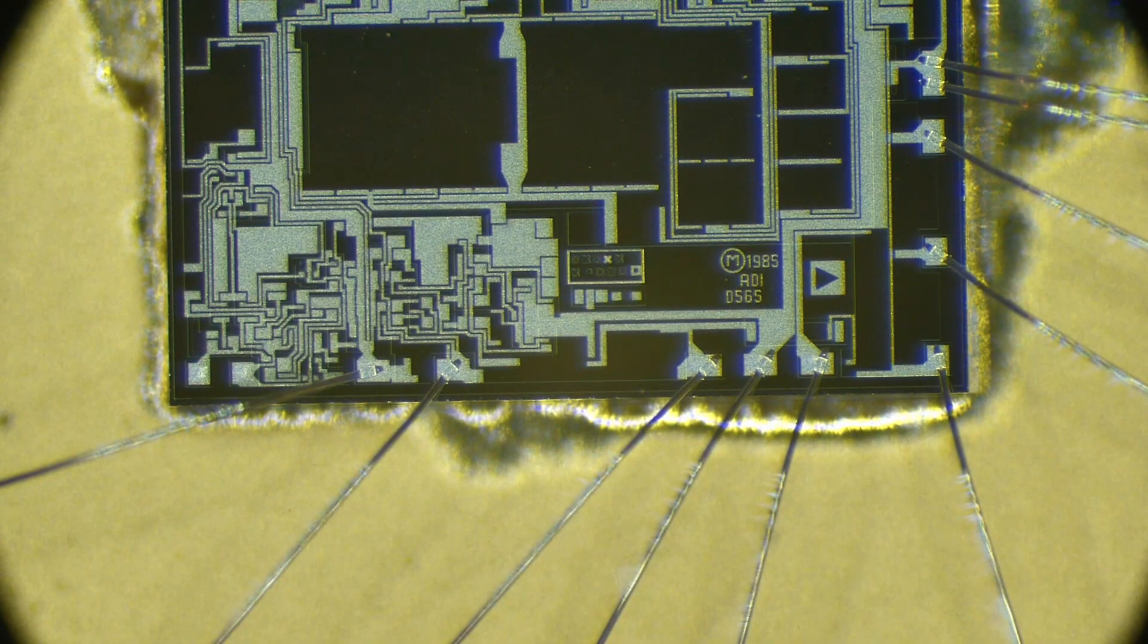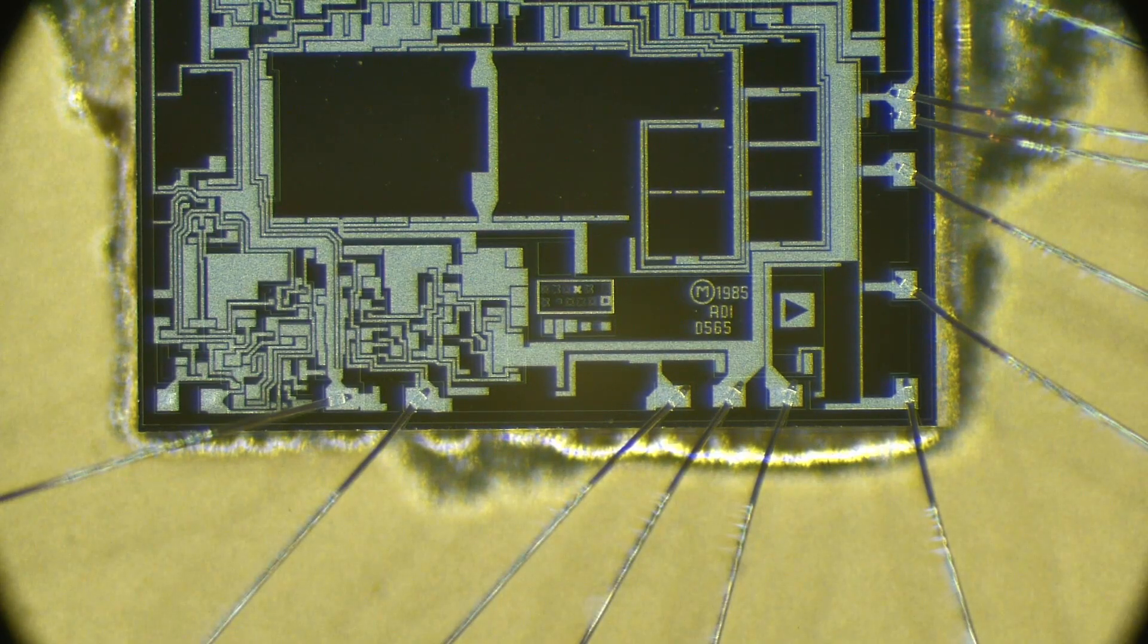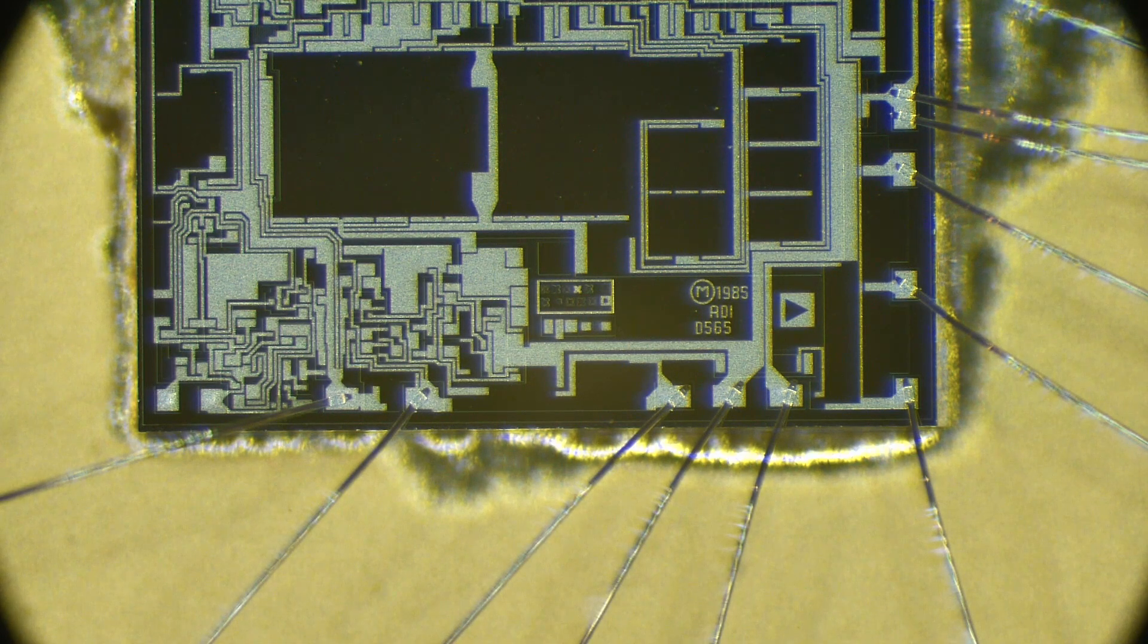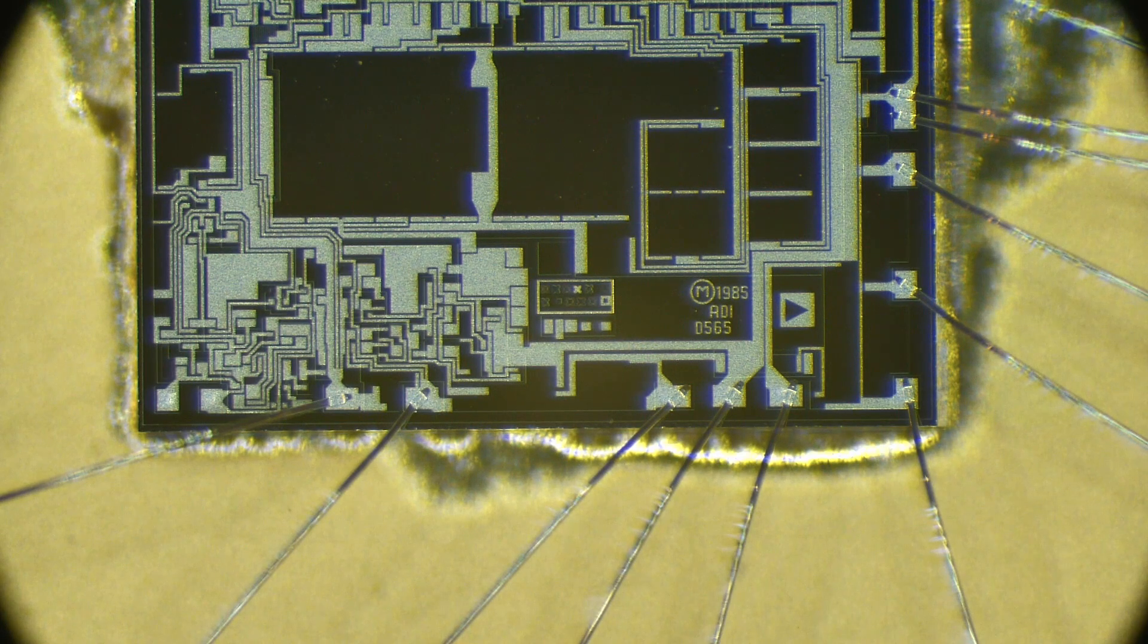If you look closely, you can read the date and the part number and the little Analog Devices symbol, the little arrow. Yeah, pretty cool. I like it.